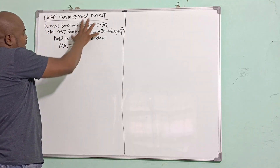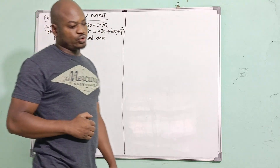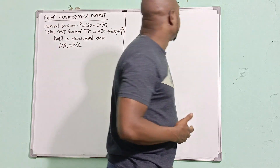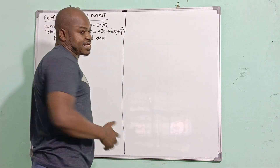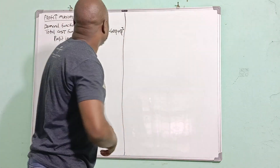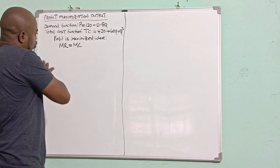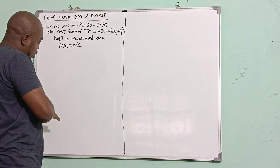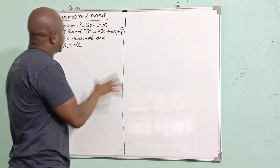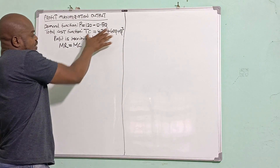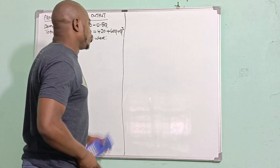Once I find the total revenue, I need to differentiate it using basic calculus to find the marginal revenue. In the same manner, to find the marginal cost I need to differentiate the total cost function.